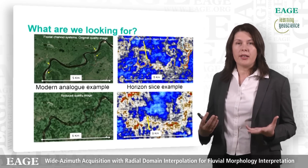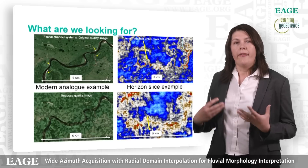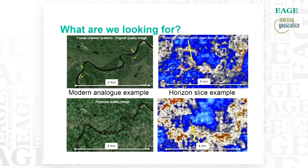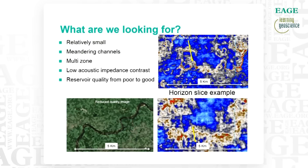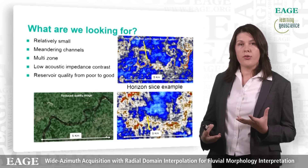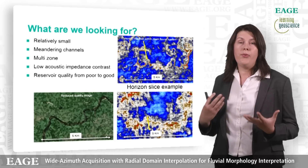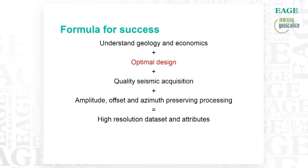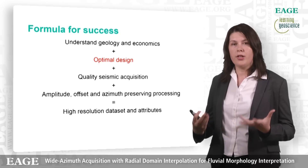Looking at the corresponding seismic examples, you can see that on the top right we have much more chance to see the individual details than in the picture on the bottom right. To summarize, we are looking for relatively small meandering multi-zone channels which have low acoustic impedance contrast and are situated within high acoustic impedance contrast coals, so they will be quite difficult to find. Also, reservoir quality varies from poor to good depending on whether you are drilling into the shaley sand or the pure sand banks. This puts stringent requirements on seismic design.